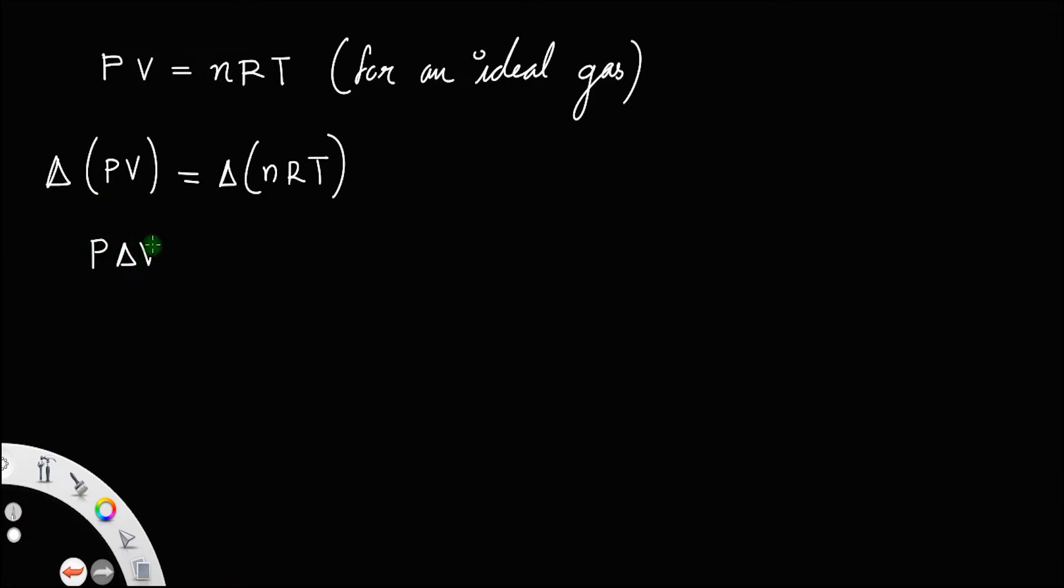we have P times change in volume is equal to nR delta T, since nR always remains constant. Call this equation number 1.